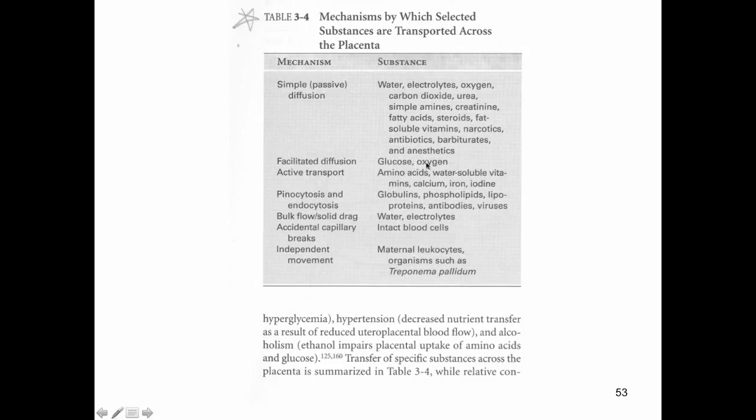Facilitated diffusion: glucose and oxygen can cross through facilitated diffusion mechanisms. Active transport of amino acids and some water-soluble vitamins, minerals like calcium, iron, iodine. We also have the movement of certain substances like large proteins, globulins, phospholipids, antibodies, viruses, and they cross through an active transport mechanism that we call pinocytosis or endocytosis, basically movement through vesicles. We have bulk flow movement of water and electrolytes. Intact blood cells don't usually cross, but every once in a while you've got a broken capillary that allows it to cross. And those are the major substances that are going to move across and the mechanisms that are used.